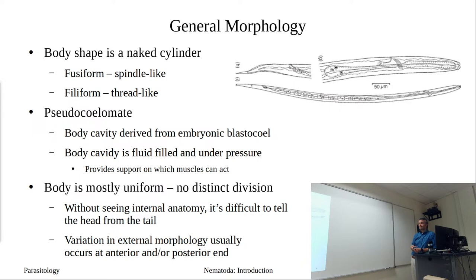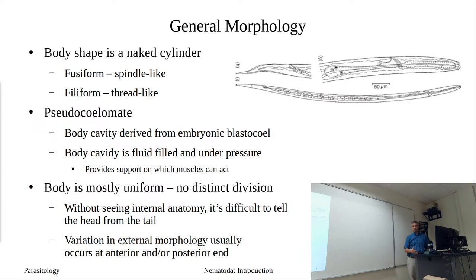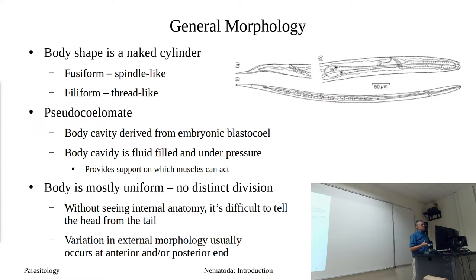These worms are pseudocoelomates. You do have a body cavity but it's not a true body cavity — it's not a cavity lined by a true mesoderm. Specifically, this body cavity is derived from the embryonic blastocoel. This fluid-filled body cavity has rigidity — it's under pressure — which provides a hydrostatic skeleton, giving support so that muscles can act and allow movement.